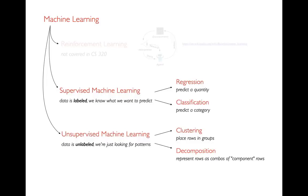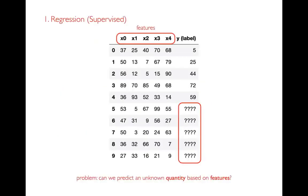In unsupervised learning, we might cluster our data by placing rows into different groups. Or we might try to decompose our rows — noticing that rows with five numbers might each be a combination of two component rows. There's some simplicity in there even though there might be a lot of columns. I'm going to go through these four types of things we're going to learn this semester and try to make it more concrete.